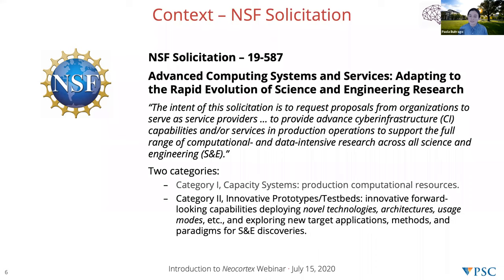These category two systems are aimed to capture forward-looking capabilities. As the text says, they deploy novel technologies, architectures, usage models, and target the exploration of new applications, algorithms, or paradigms, all in the aims of fostering scientific discovery in science and engineering. NeoCortex is a category two type of system. Of these systems, only three have been awarded so far: one last year, SDSC Voyager this year, and NeoCortex, which will be delivered by the Pittsburgh Supercomputing Center. This is a new category of system — more flexible, more exploratory, all about exploring new approaches to make science happen.